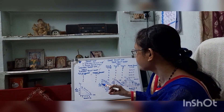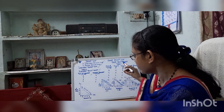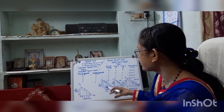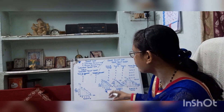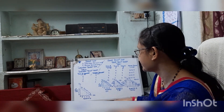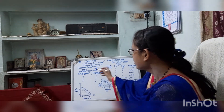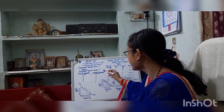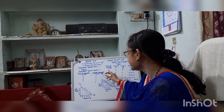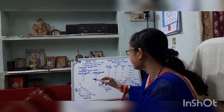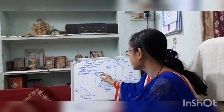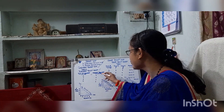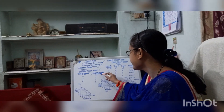If you want to understand the demand curve, first we have to understand the individual demand schedule. This row shows the price of chocolate and this row shows the quantity demanded — price in rupees and quantity demanded in units.